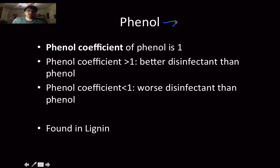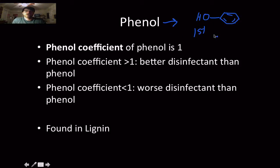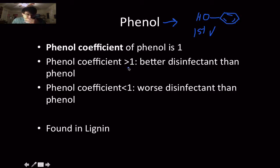So, phenol — if you've had organic chemistry, you know this is an alcohol group attached to an aromatic ring. It has a phenol coefficient, and what makes it significant is that it was the first disinfectant we ever used. So we now compare any disinfectant to phenol. If something has a phenol coefficient greater than one, it is better than phenol. If it has a coefficient less than one, it is worse.